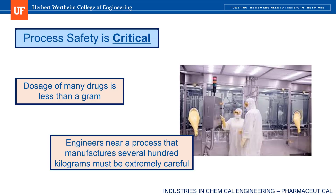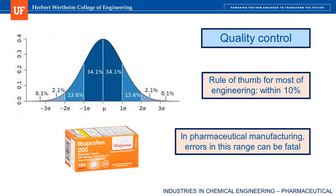As a final note, process safety is critical in every field of chemical engineering, but perhaps even more so in the pharmaceutical industry. Consider this: dosages of many drugs are a gram or less, sometimes even on the milligram scale. Yet at the commercial scale, engineers are making batches of drugs hundreds of kilograms at a time. Personal safety is critical, as you need to make sure that employees around all these active pharmaceutical ingredients aren't accidentally ingesting or inhaling the API. In addition to safety for employees, the engineer must consider the safety of patients. A frequent guideline in engineering is the 10% rule, which says that any calculation an engineer performs should be within 10% of the true value. However, when manufacturing pharmaceuticals, engineers must be more accurate, and they need an understanding of statistics in order to develop quality control protocols.